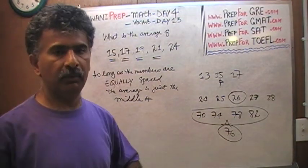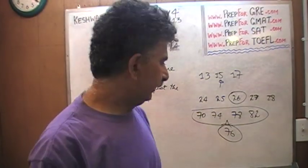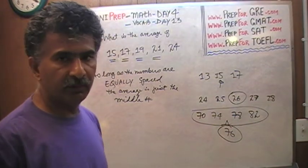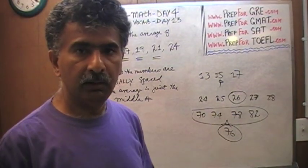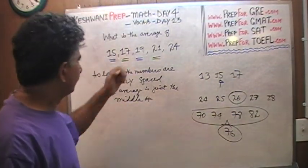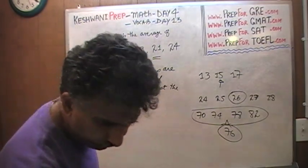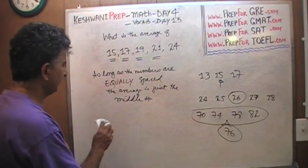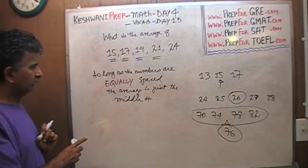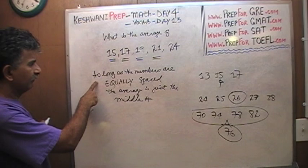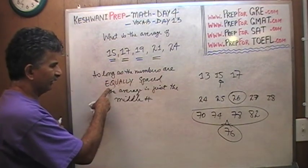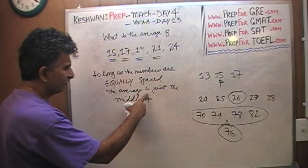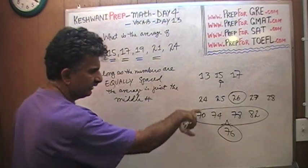And if you don't believe me, do it out on the calculator and you will verify it, that in fact the average of 70, 74, 78, and 82 is in fact 76. Let's do this problem. I really do need to erase this statement here because it's bugging the hell out of me, I cannot work like that, so I need to erase it. One more time, I'm going to read it to you before I erase it. As long as the numbers are equally spaced, the average is just the middle number, as I showed you three examples here.